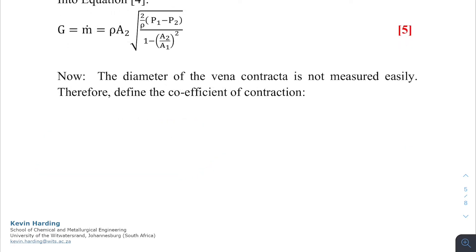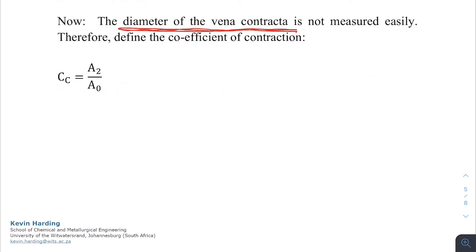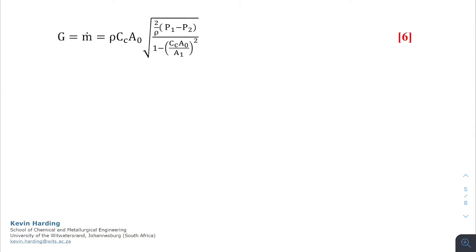We now need to consider what area 2 actually is. Area 2 is the area of the vena contracta, but unfortunately the diameter of the vena contracta is not easily measured. So we define a coefficient of contraction, CC, which equals area 2 divided by area O (the orifice plate area). Rearranging, area 2 equals CC times area O. Substituting into equation 5, we have CC times area O replacing area 2. Since the orifice plate is something we installed, we know area O and can measure it.